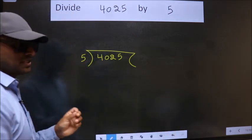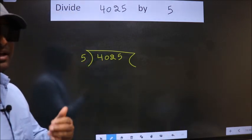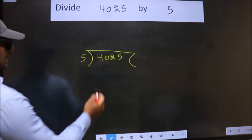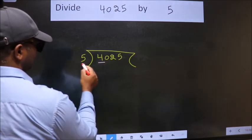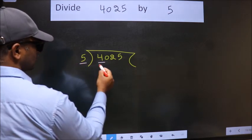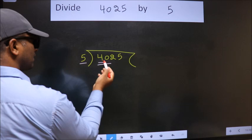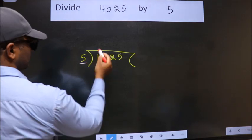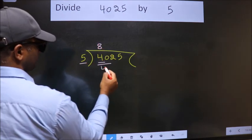This is your step 1. Next, here we have 4, here 5. 4 is smaller than 5, so we should take two numbers: 40. When do we get 40? In 5 table. 5 eights 40.